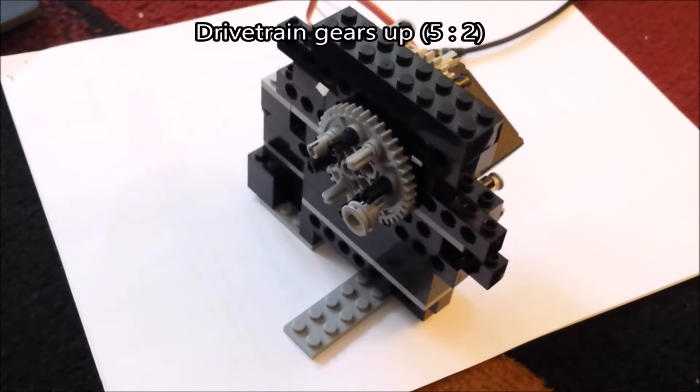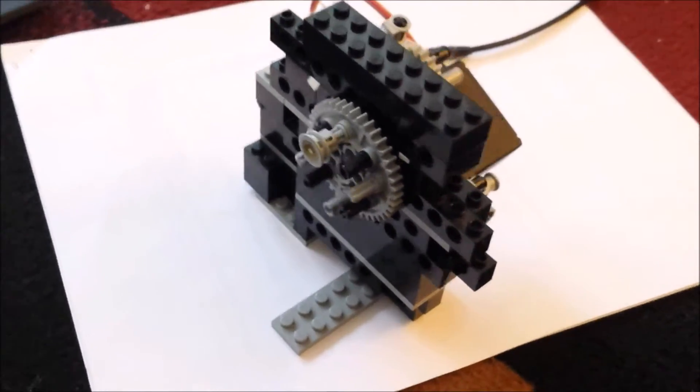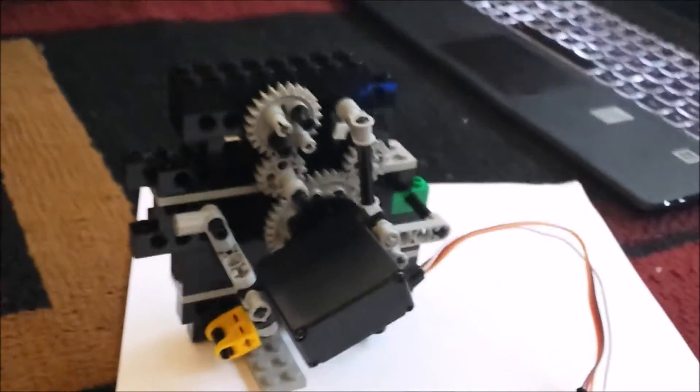The servo had a range of 180 degrees, so to get 360, a gear train increases the range by sacrificing torque. This drivetrain would benefit from metal components as the axle would bend, resulting in a slow response.